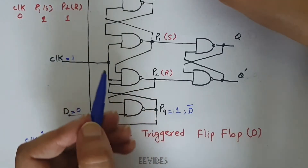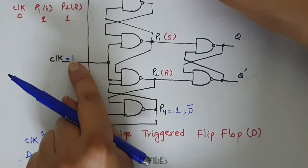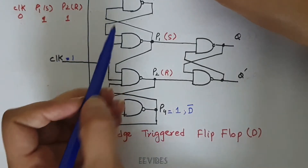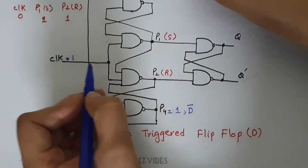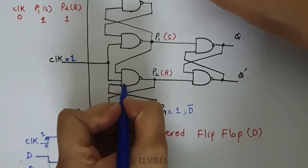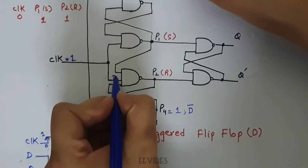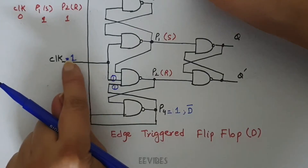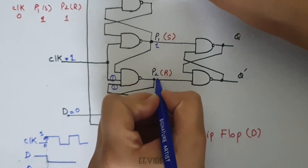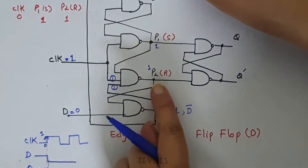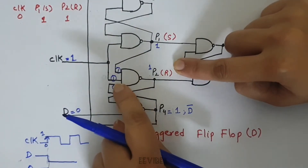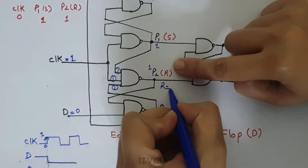Since we have switched this clock signal from 0 to 1, and previously P1 was equal to 1 and P2 was equal to 1 — they were both equal to 1 in the previous stage. This 1 is coming at this input as well, so 1,1,1,1 will force this NAND gate to produce R equal to 0.